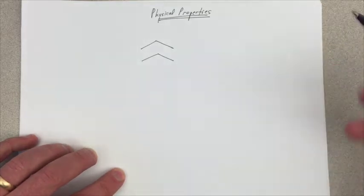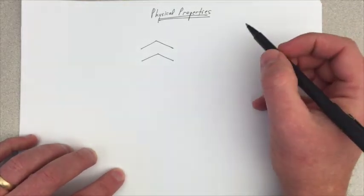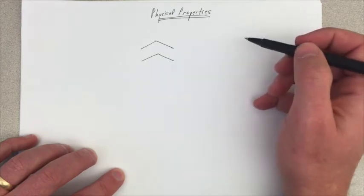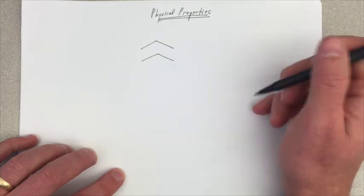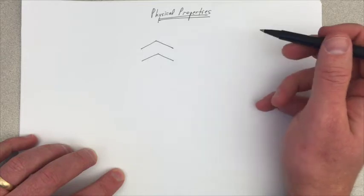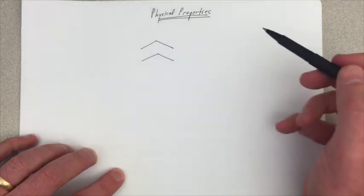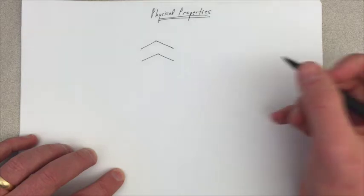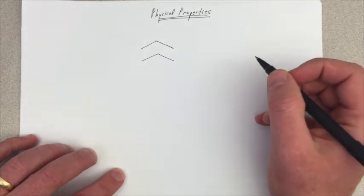Some examples of intermolecular forces are things like hydrogen bonds, dipole-dipole, or Van der Waals or London dispersion forces, and when we think about alkanes, really we focus on those London dispersion Van der Waals forces.